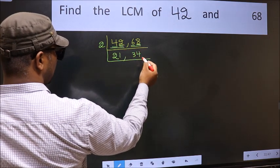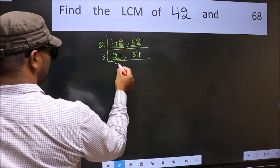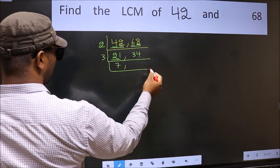Now here we have 21. 3 times 7 is 21. The other number 34, not divisible by 3, so we write it down as it is.